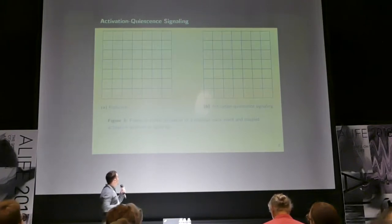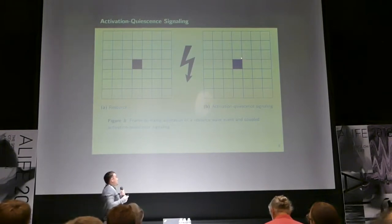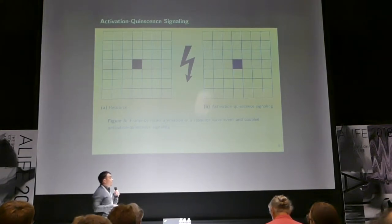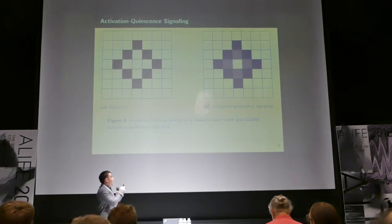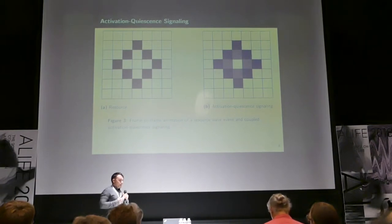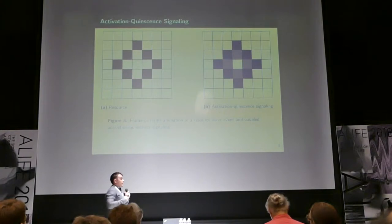How can we get these cells living in these toroidal grid titles to alert their neighbors to the availability of resource? And so, we use activation quiescent signaling to accomplish this. When we seed a resource wave event, the cell at the origin of the event is activated. And then in turn, it activates its neighbors and they activate their neighbors.